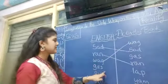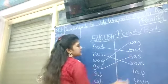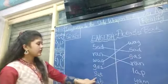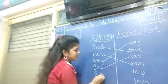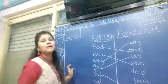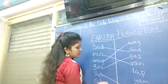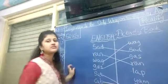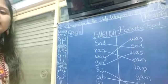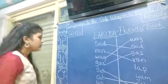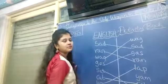Now gas. G-A-S gas. Now S-A-D sad — where is sad over here? S-A-D sad. So here you have to match. S-A-T sat. Now C-A-B cab. So you have to match C-A-B cab like this. C-A-B cab. Now lap. L-A-P lap. So you have to match L-A-P lap like this.